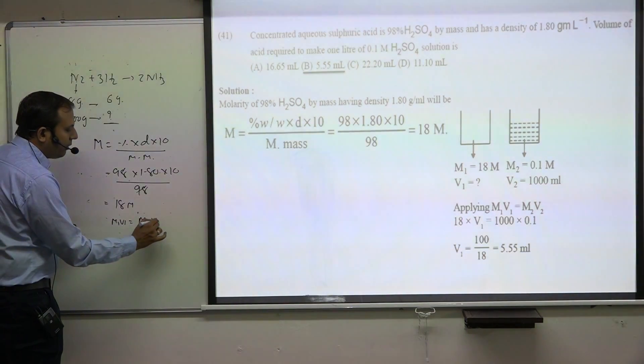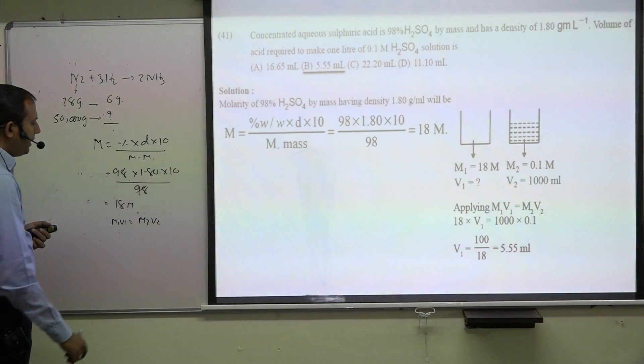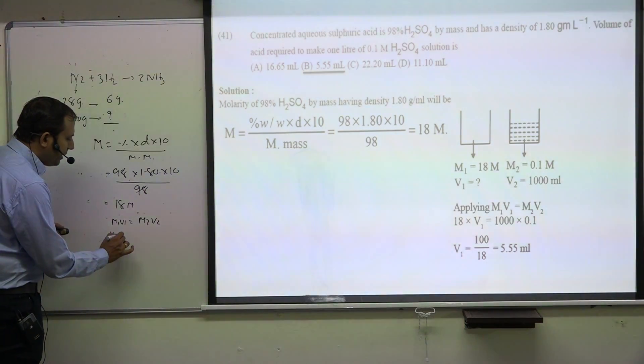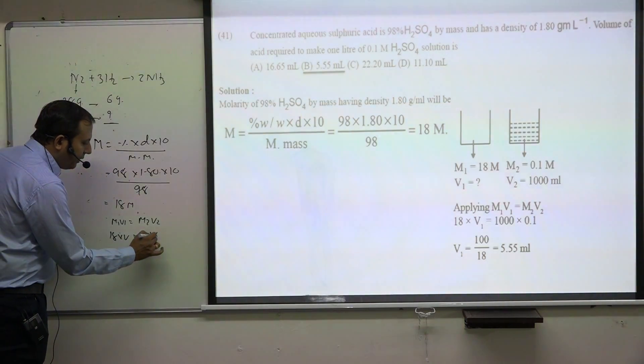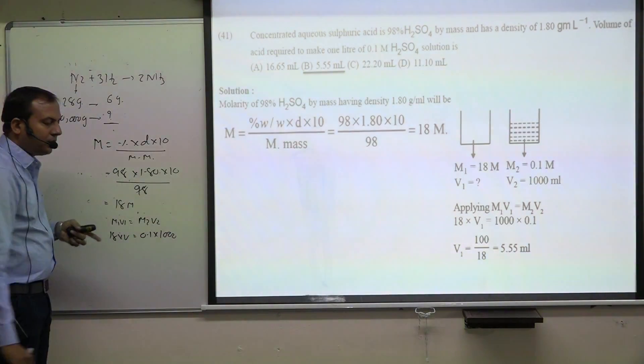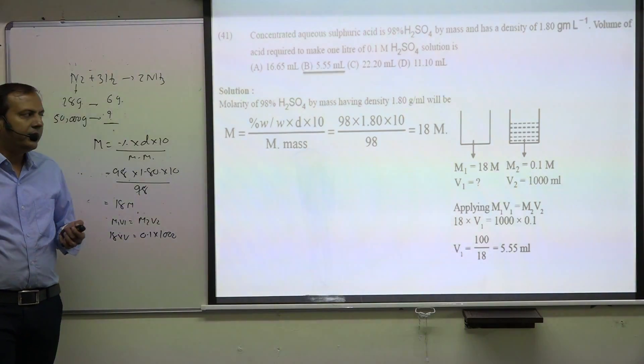Using M1V1 equals M2V2 formula: 18 times V1 equals 0.1 times 1000. Solving gives volume of 5.55 ml.